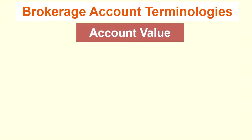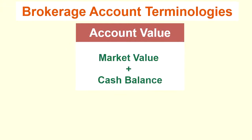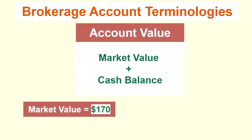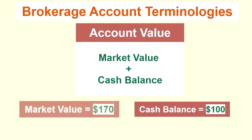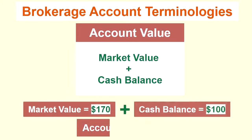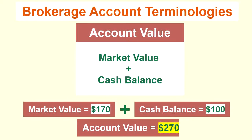Account value is the sum of the market value and the cash in your account — so it's the value of all the stocks and all the cash. For example, if you have a market value of $170 and a cash balance of $100, then your account value would be $170 plus $100 for a total of $270.